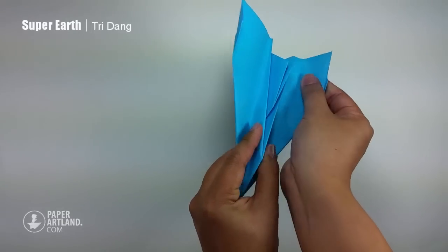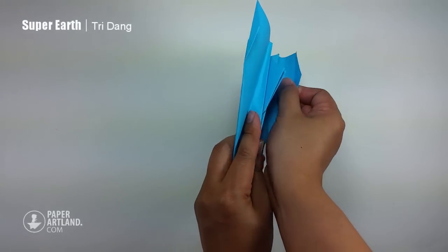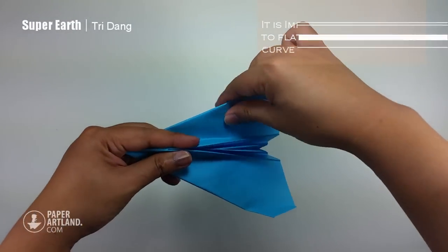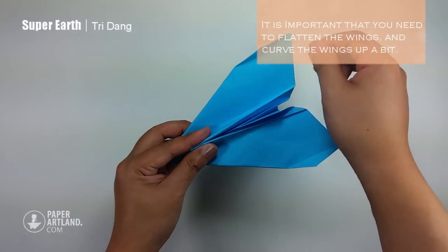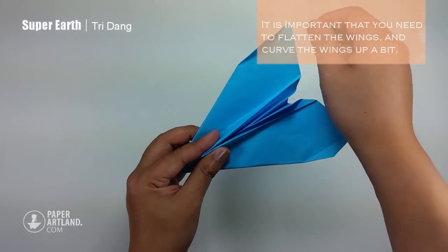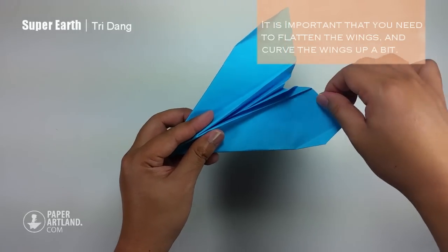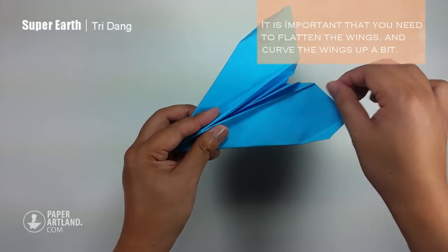And fix the wings before you actually fly it. And make sure you curve the bottom up a bit. You should not curve it up, just do it slightly. So the plane will not fly down.